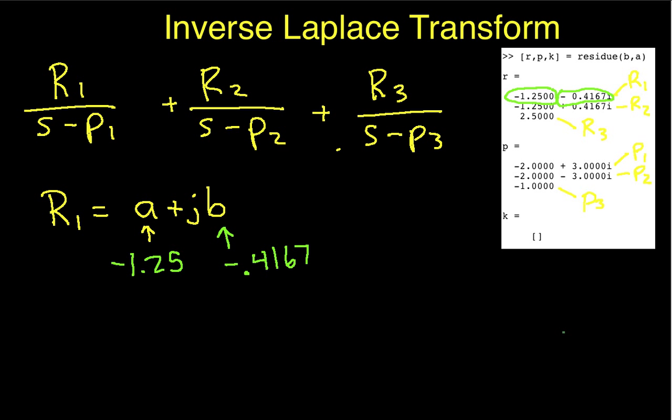Now, P1 is equal to minus alpha minus j omega. Okay? So, if we look at P1, this is minus 2, which is the same as minus alpha, which says then that alpha is equal to 2.